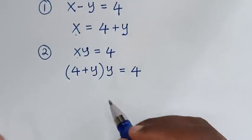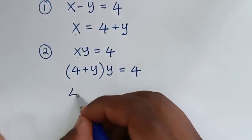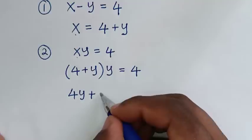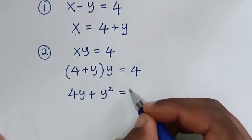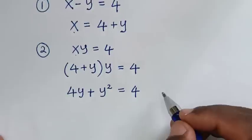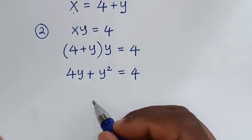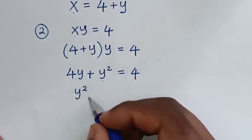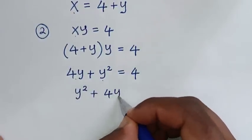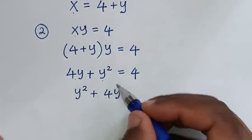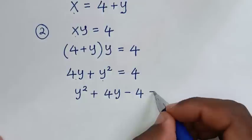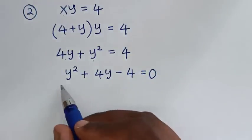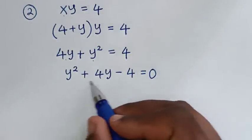Expanding: y times 4 is 4y, then plus y times y is y squared, is equal to 4. Rearranging, we write y squared plus 4y minus 4 is equal to 0. Now to solve this quadratic equation in terms of y, we apply the quadratic formula.